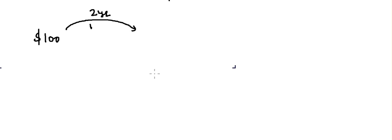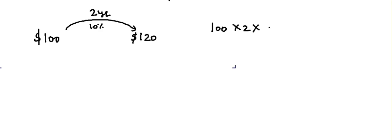Now, what's wrong with simple interest? Suppose you have $100 and invest it for two years at 10%. You would get $120 — you take 100 × 2 × 10 divided by 100, which gives $20 interest, ending with $120.